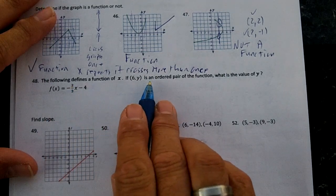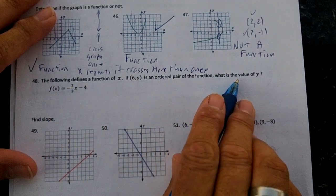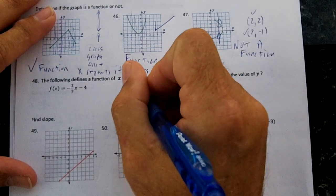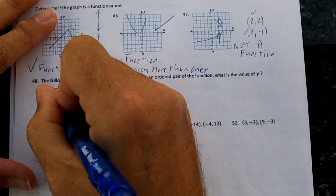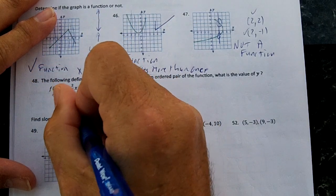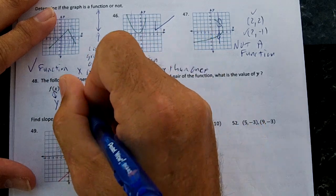The following defines a function. If (6,Y) is an ordered pair, what is the value of Y? So X is 6 and we're going to find our Y, right? So plug in 6. Y equals F(X), and Y and F(X) are the same thing. So negative 2 over 3, our X is going to be 6.